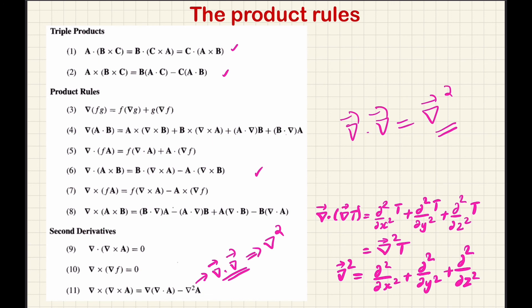So, altogether in this lecture we have discussed the definition of ordinary derivatives and the del operator with its three operations: gradient, divergence, and curl, along with the geometrical interpretation of each. We then discussed various product rules and the second derivatives of the del operator. Hope you understood the topics discussed in this lecture. Thank you.